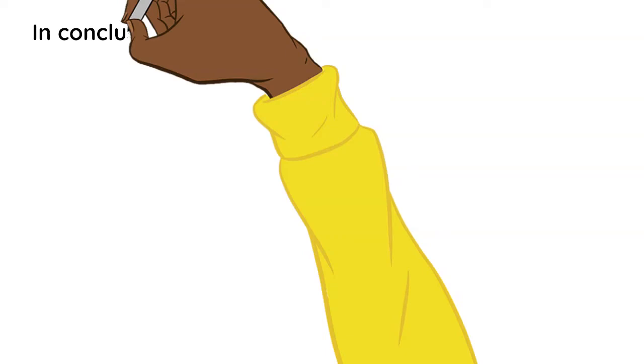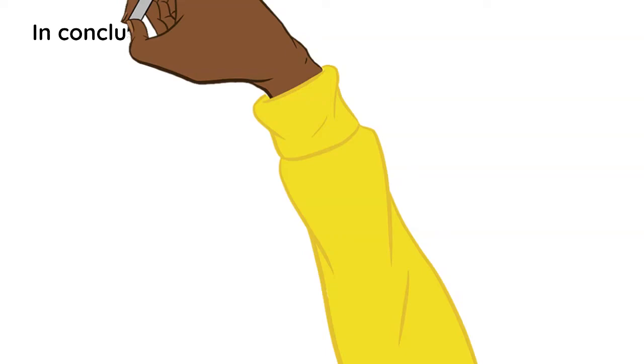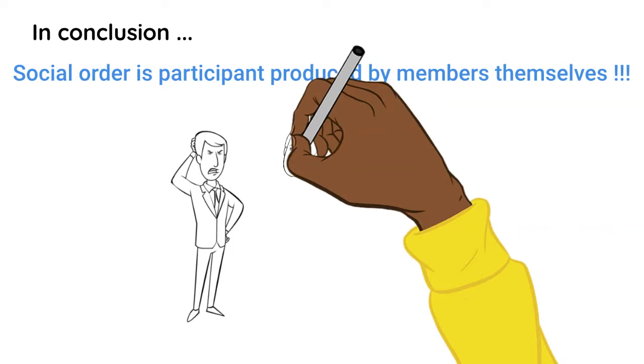Garfinkel concluded that by challenging people's taken for granted assumptions, the experiment showed that social order is participantly produced by members themselves.